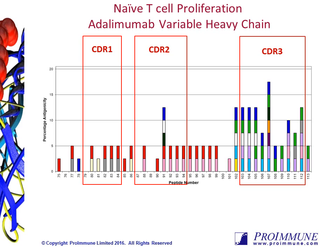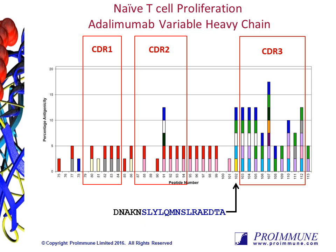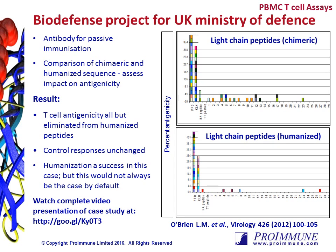By combining these data with the data generated from our ProPresent antigen presentation assay, we identified peptide 102 as being naturally processed and presented, and confirmed its functional relevance using the ProMAP naive T-cell proliferation assay. Another way in which the T-cell assay has been used is demonstrated in this example from the UK Ministry of Defense.